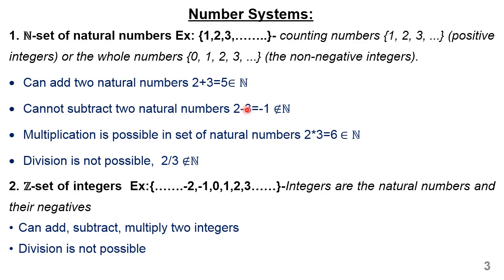Let us see five sets of number systems. The first one is the set of natural numbers, denoted by the letter N. The example is 1, 2, 3, up to infinity. These are positive numbers or non-negative integers, and it can be inclusive of zero.